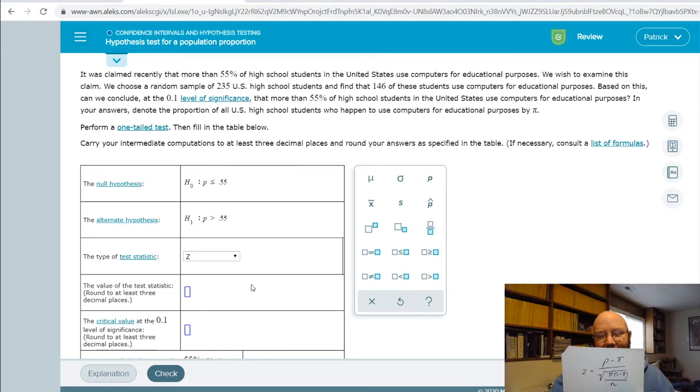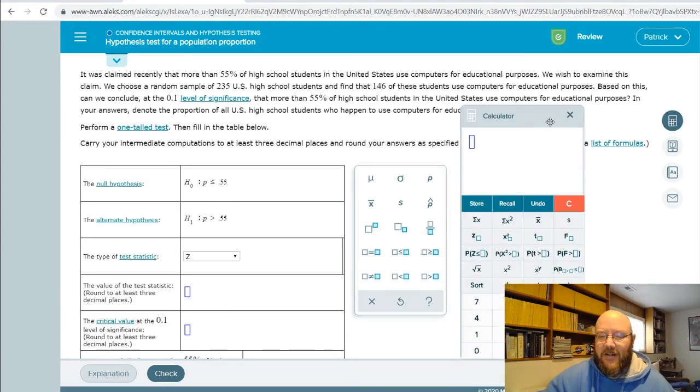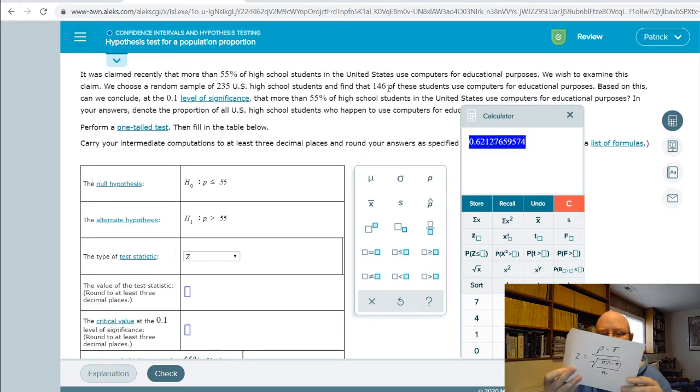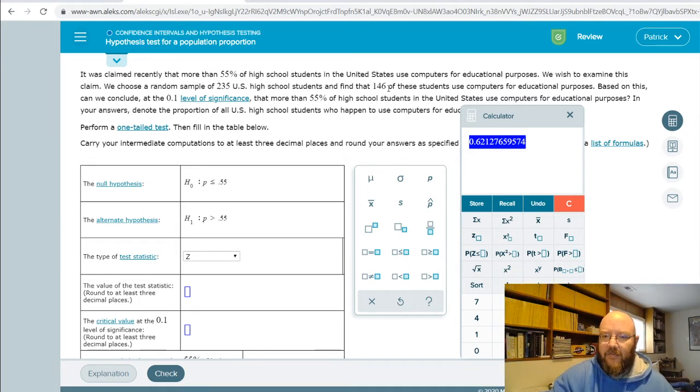But once we actually do this one in the calculator a couple times, it's not that hard. We're going to punch that in. The first thing that you have to calculate is this P, your proportion. And you do that by taking the number of favorable cases, which is the number that you're looking for. So 146 people decided to use computers out of 235 that we tested. There's your P right there. It's the only time you need to calculate that in this equation. So you take that and then you're going to subtract your population proportion, which they guess it's at 0.55.